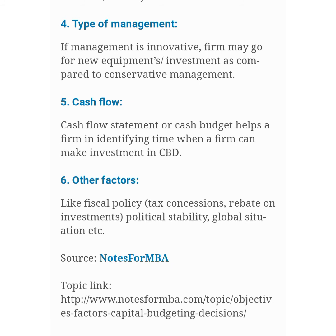The next factor is type of management. If the management is innovative, the firm may go for new equipment or investment as compared to conservative management. The cash flow statement or cash budget helps the firm in identifying when a firm can make investment in capital budgeting decisions. The last point is other factors like physical policy, tax concessions, rebate on investment, political stability, and global situation.